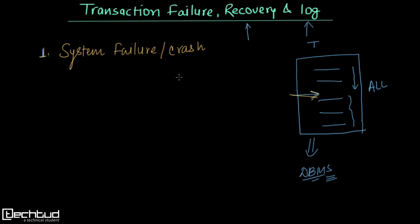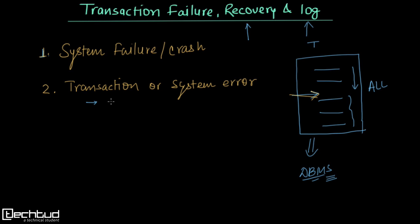The next reason is transaction or system error. These failures occur when, for example, during the transaction the system executes an expression like something divided by zero — this will cause a transaction failure. Similarly, storing a value in an integer where the value is larger than the range provided will also cause a failure. A programmer may also have written code that is not well tested, causing a logical programming failure. These kinds of errors come under transaction or system errors.